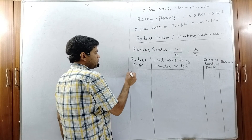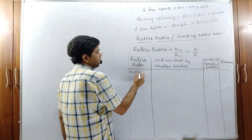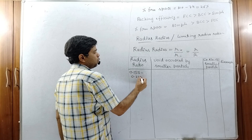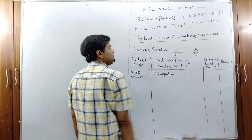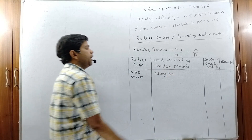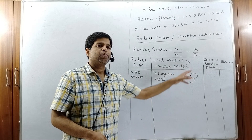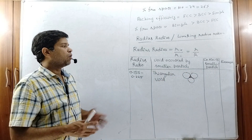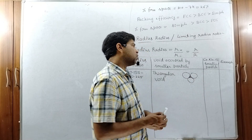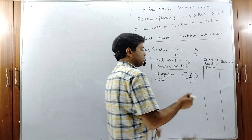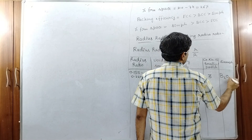If the radius ratio is 0.155 to 0.225, the smaller particle occupies a triangular void. This void is triangular in shape, and the red particle is surrounded by three particles, so the coordination number of the smaller particle is three. An example is P₂O₃.